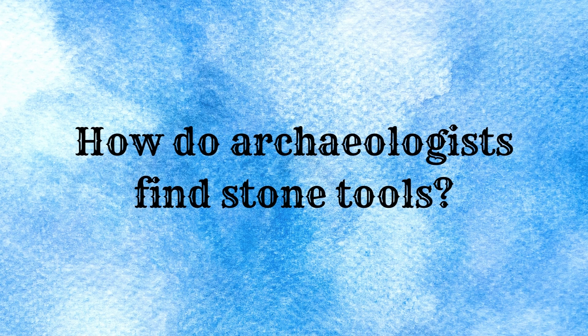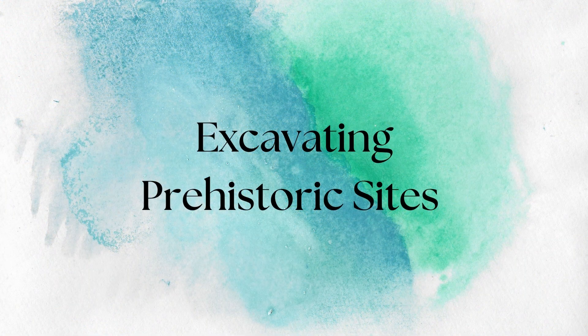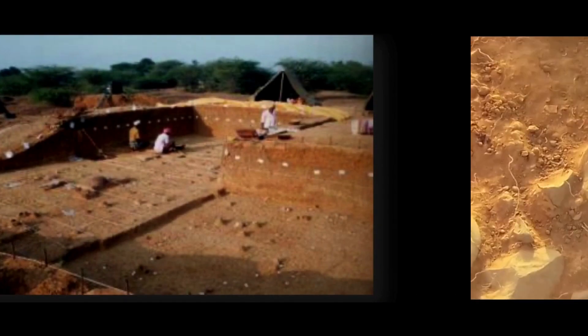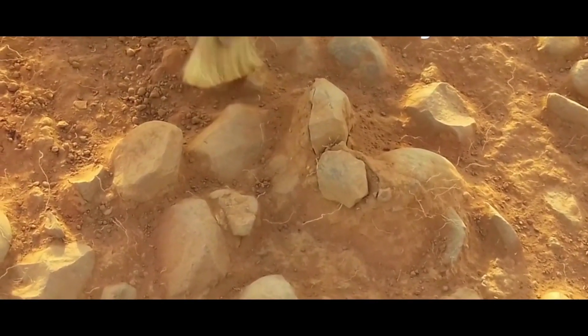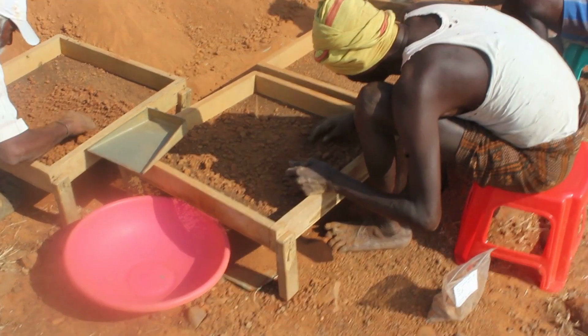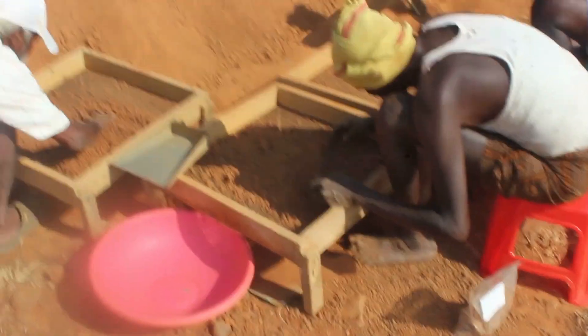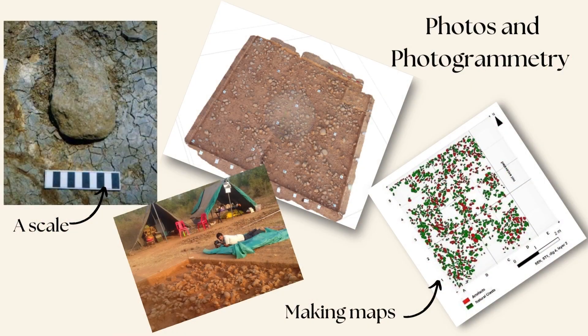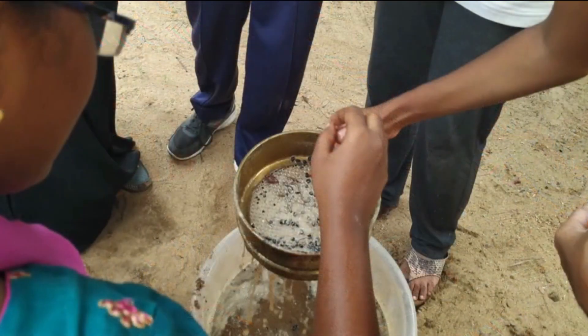How do archaeologists find stone tools? Archaeologists survey or search for prehistoric sites using many methods. They excavate or dig sites very, very slowly, brushing away ancient soils to reveal stone tools. They sieve the soils to recover tiny fragments of stone that were knocked off when tools were made thousands and thousands of years ago. They take photos and videos and make maps of what they find. You can also learn how to excavate just like archaeologists — visit us to experience the past.